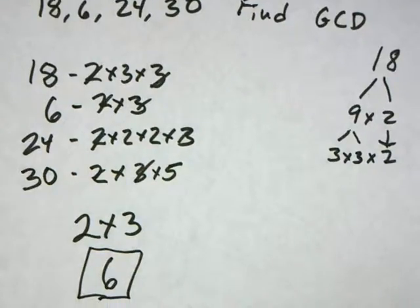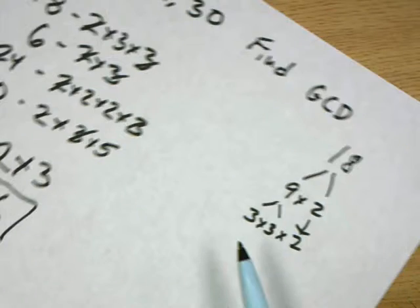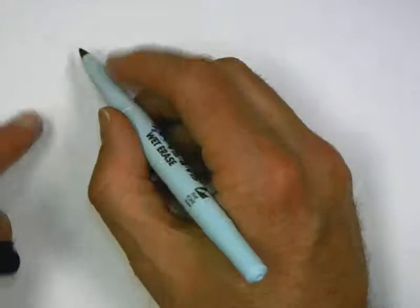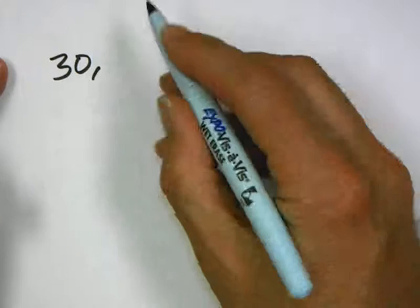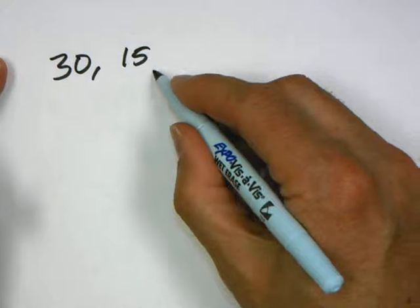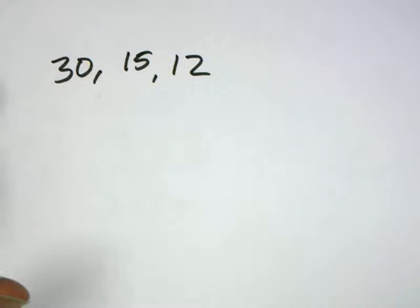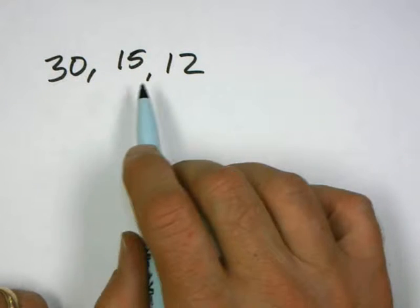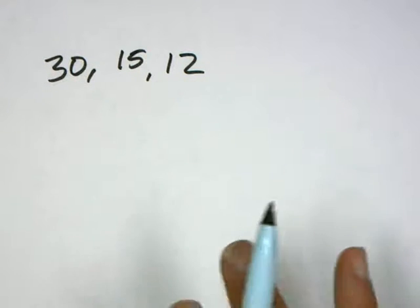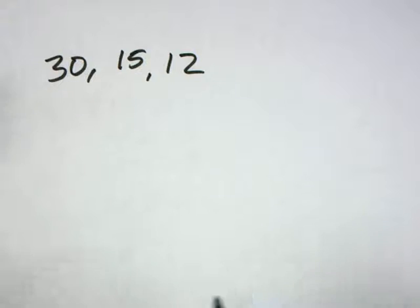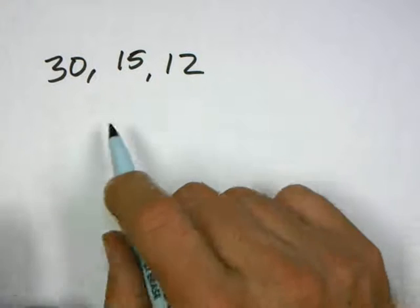Let's do another that you might see on your test. We're looking for the GCD between 30, 15, and 12. What number can 30, 15, and 12, what group can a number of, what can they each be divided by evenly? What's the greatest number they can be divided evenly into?